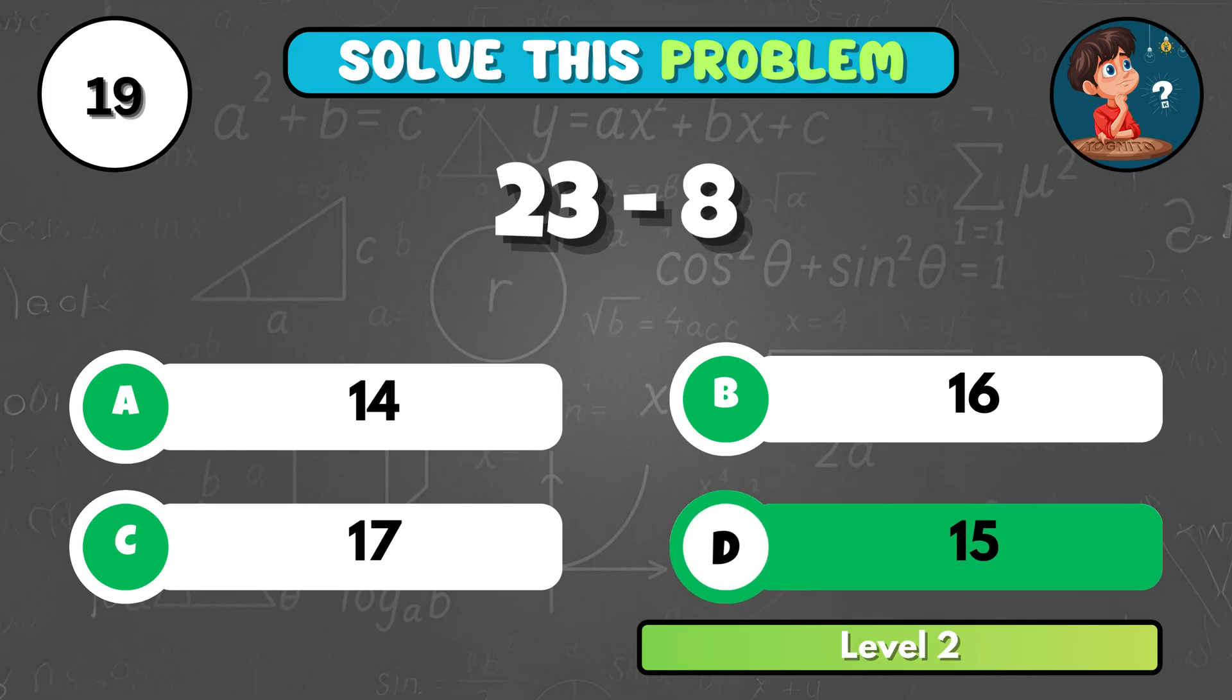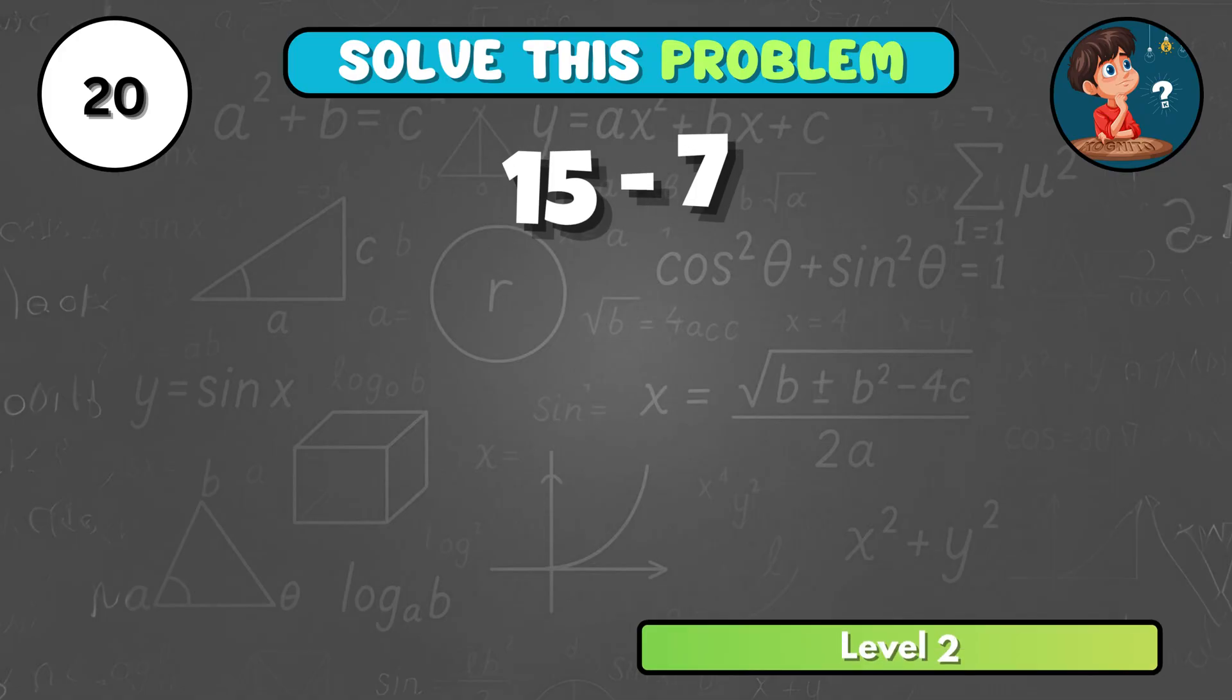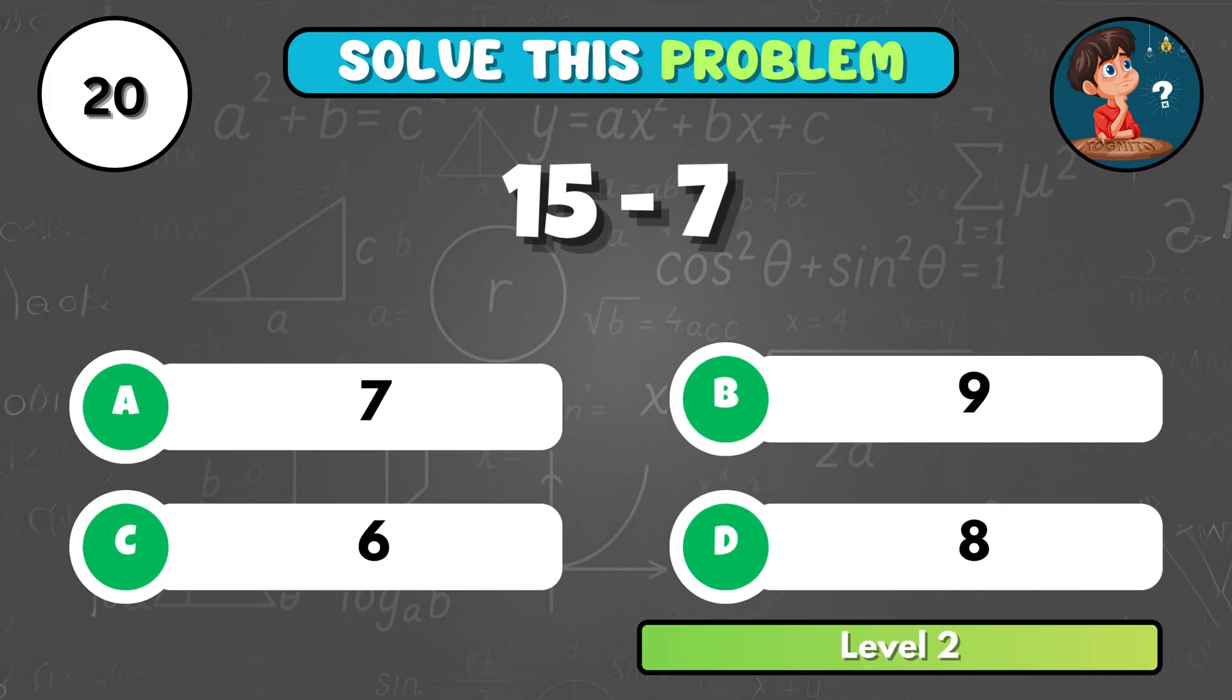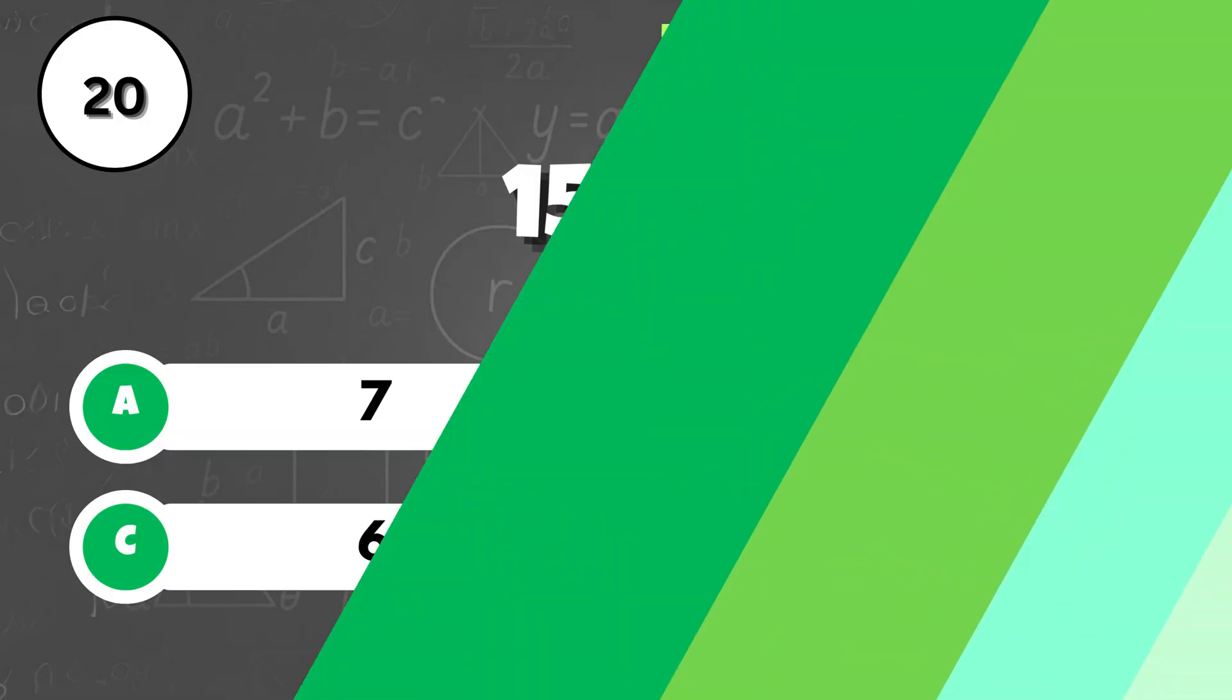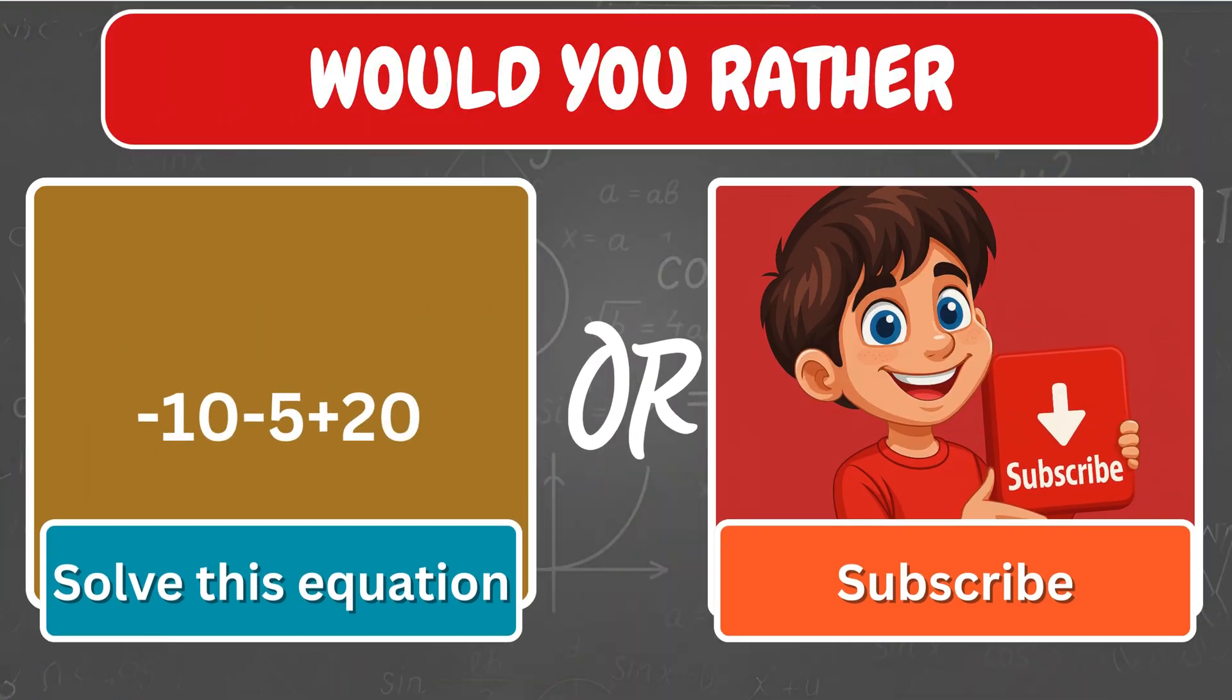Let's see if you know 23 minus 8 equals! That's D, 15! Next up 15 minus 7! What's the result? It equals D, 8! Would you rather solve this equation or subscribe?